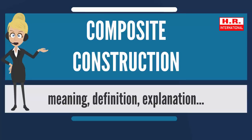In structural engineering, composite construction exists when two different materials are bound together so strongly that they act together as a single unit from a structural point of view. When this occurs, it is called composite action.